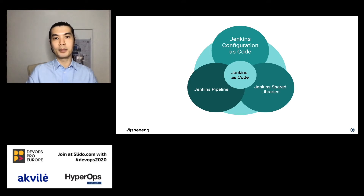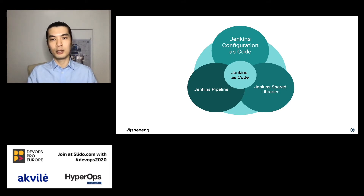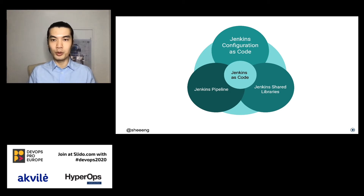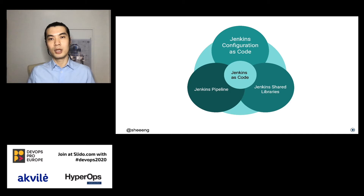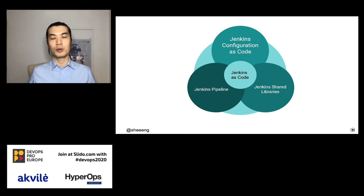Before we dive deeper into the nitty-gritty configuration in the text files, let's take a step back and look at what actually defines or builds up all these components in Jenkins as Code. In today's world, we use a lot of tools and we want to maintain them as easily as possible. One of the main recommendations is that we want all these configurations and setups to be configured from text files. That improves readability, traceability, and also helps teams collaborate so that everyone can contribute to the software delivery process.